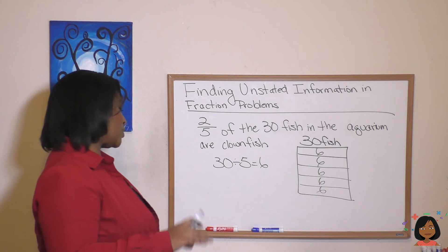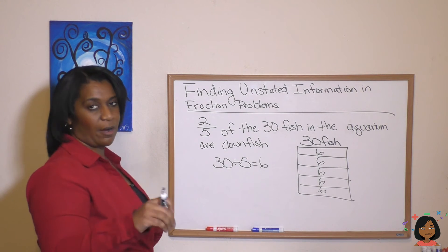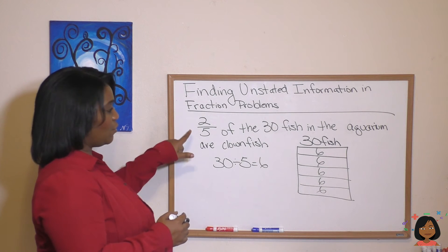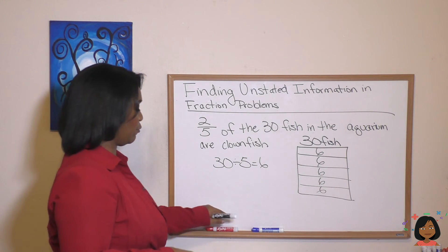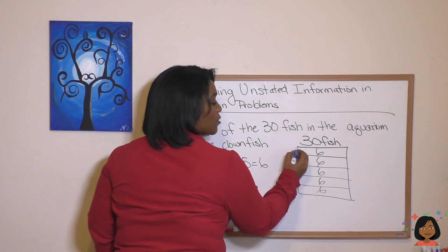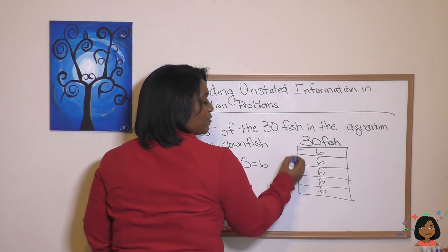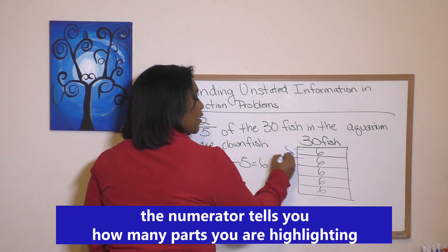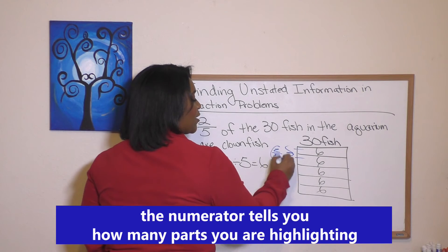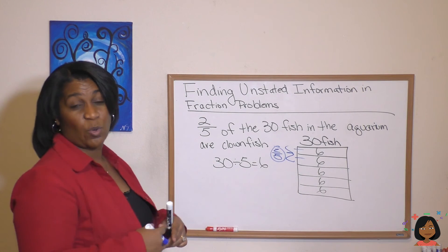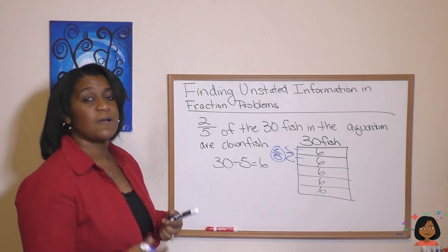Our third question was: how many parts of the group are clownfish? They told us that two-fifths of the group were clownfish. So two-fifths — here's one-fifth, here's two-fifths. There are my two-fifths that are clownfish. So how many parts? Two parts.